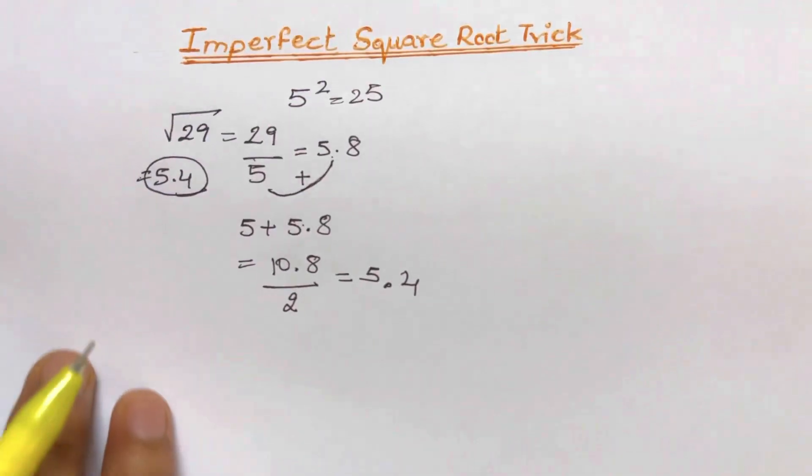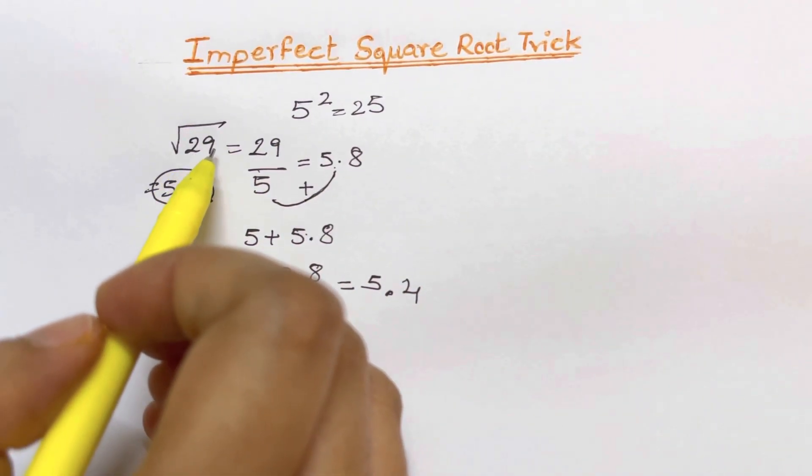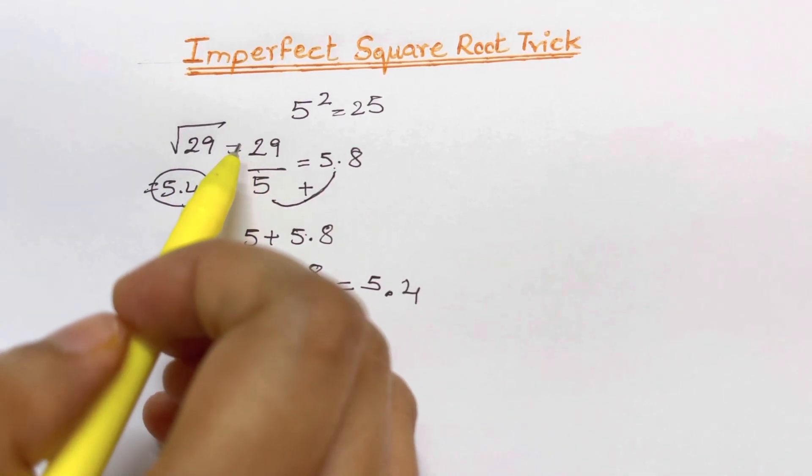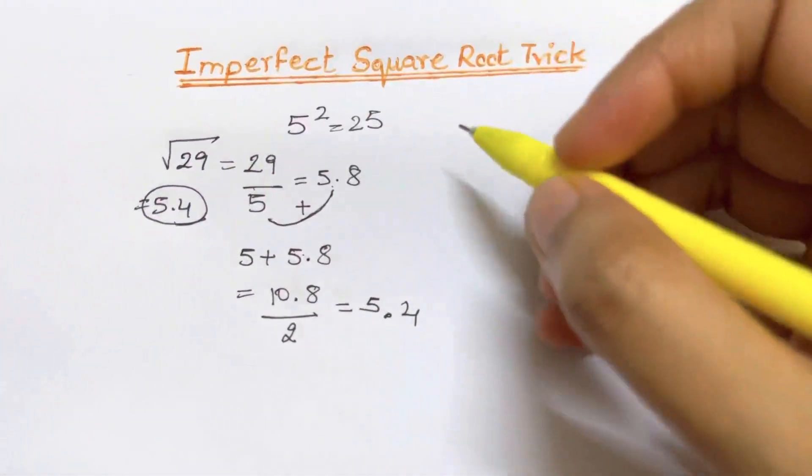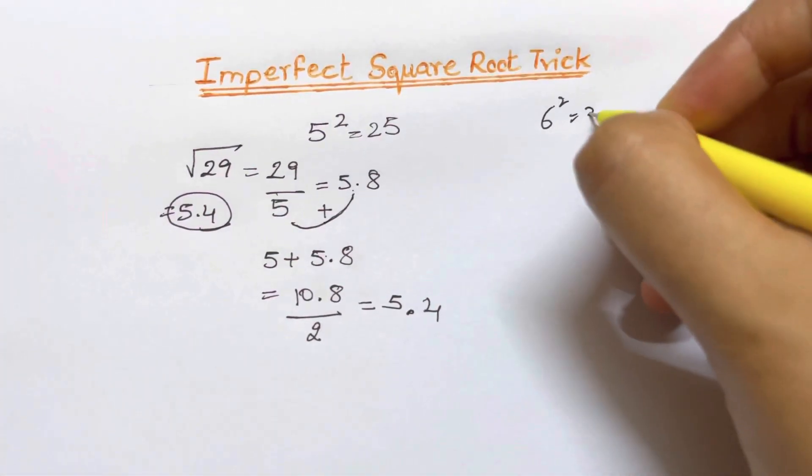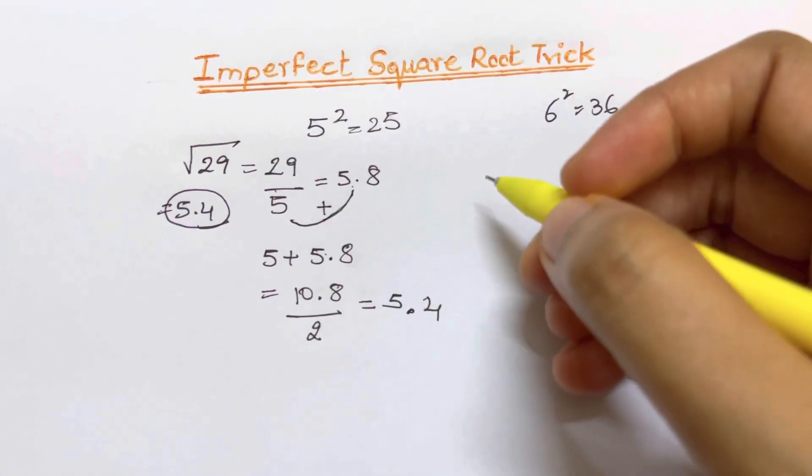Now let's see. You may also say that the nearest square number to 29 can also be 36. So let's try it out with the number 36. 6 squared gives you 36. That's also the nearest number to 29, so let's check with 36.